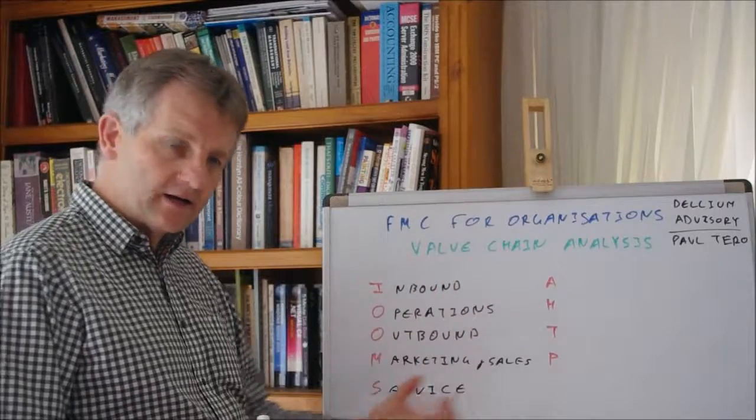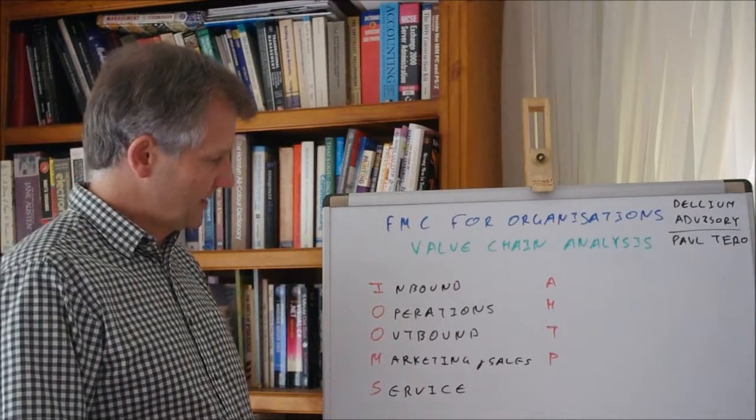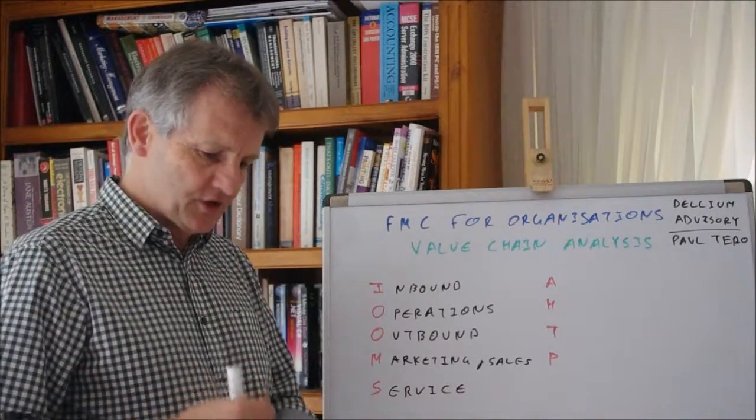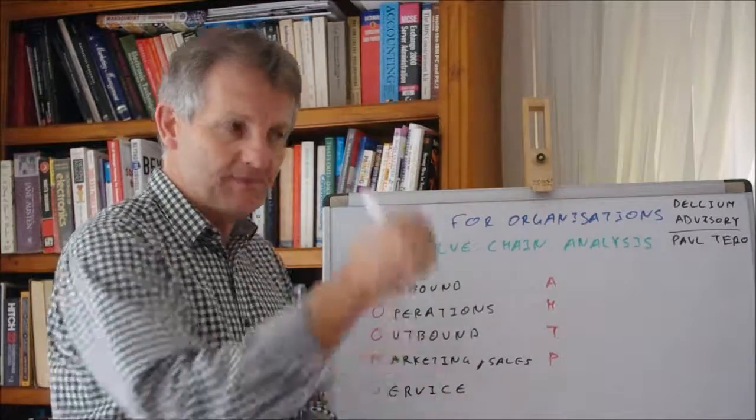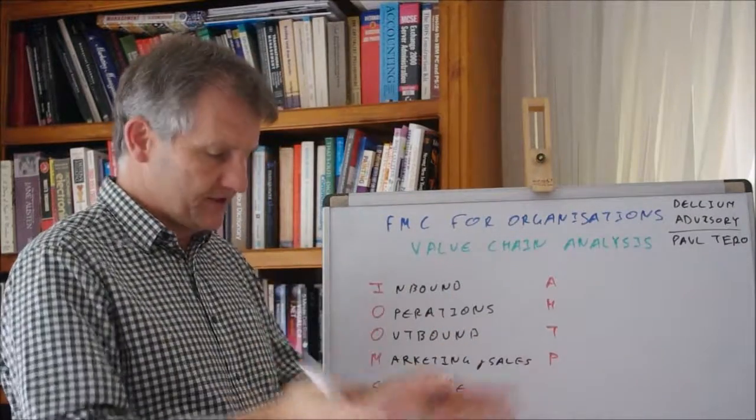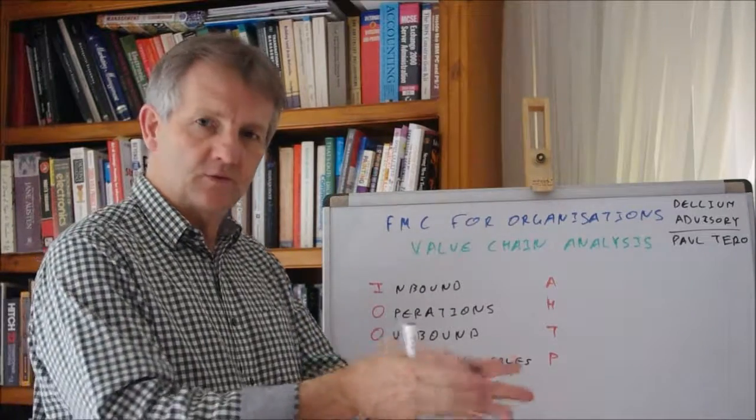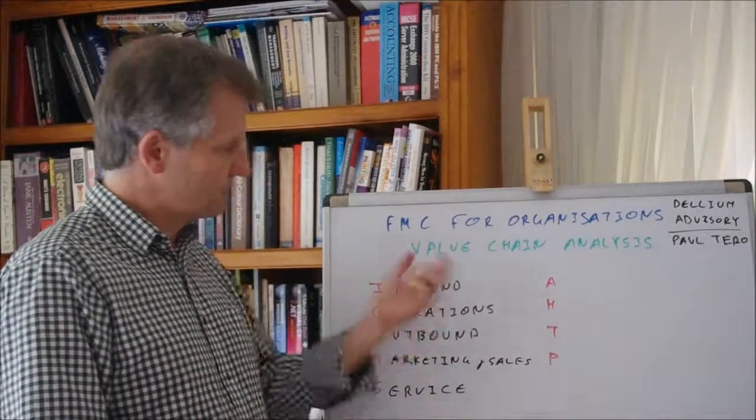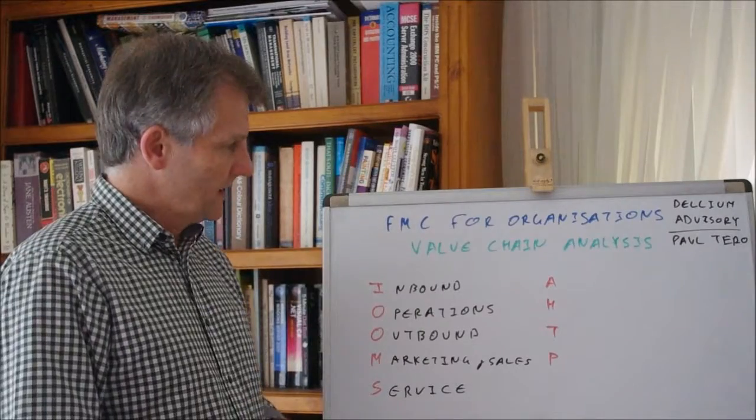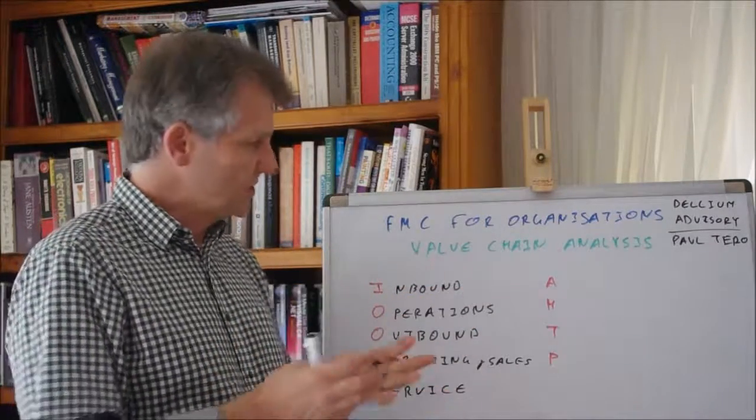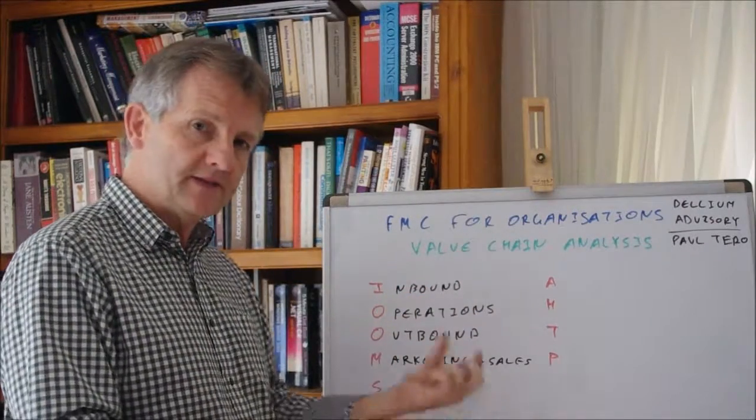So that's the primary aspects of the value chain - what takes those raw materials and gets them out into the market and the value you're creating. The secondary one is all those activities which go into supporting this happening.